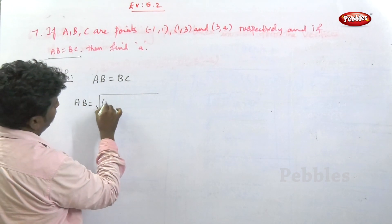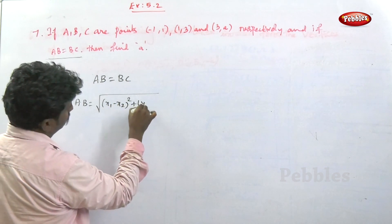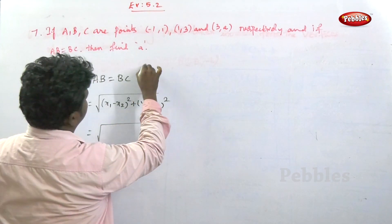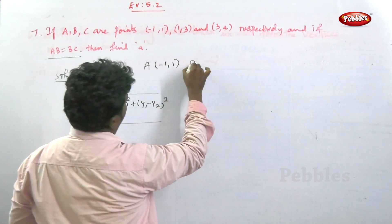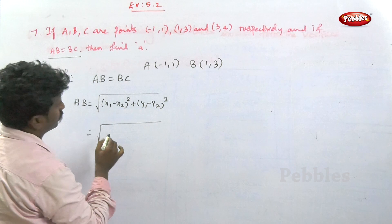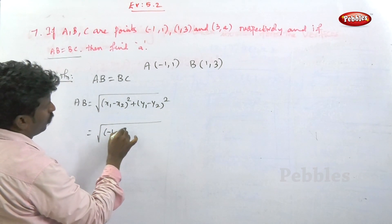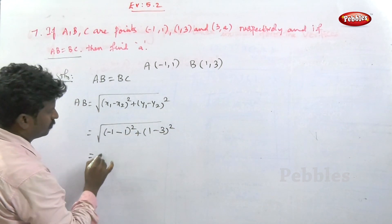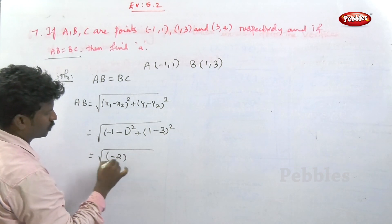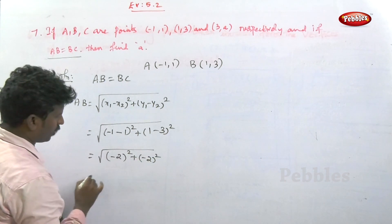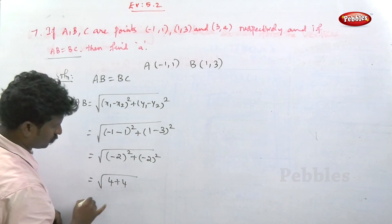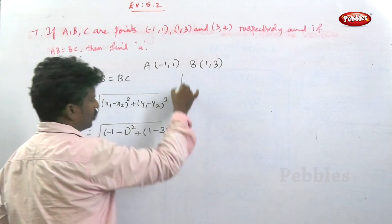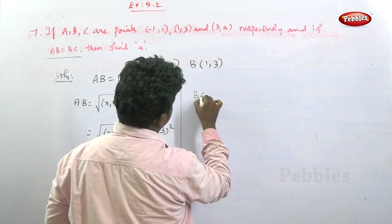Using the distance formula: root of (x1 minus x2) whole square plus (y1 minus y2) whole square. Point A is (-1, 1) and point B is (1, 3). So AB equals root of ((-1 minus 1) squared plus (1 minus 3) squared) = root of (4 + 4) = root 8.